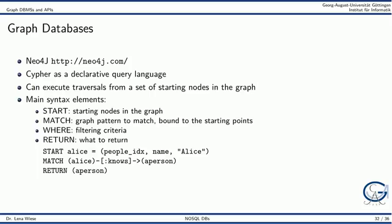Neo4j is a popular open source graph database. It has a declarative query language called Cypher. With Cypher, you can express graph traversals from a set of starting nodes in the graph. The main syntax elements of Cypher are the START directive, the MATCH directive, the WHERE condition, and the RETURN statement. In the example, a starting node named Alice is looked up in an index. In the MATCH directive, from the starting node, we follow the 'knows' edge to another person. This person is then returned, so the example returns all friends of Alice by going along the 'knows' edges.